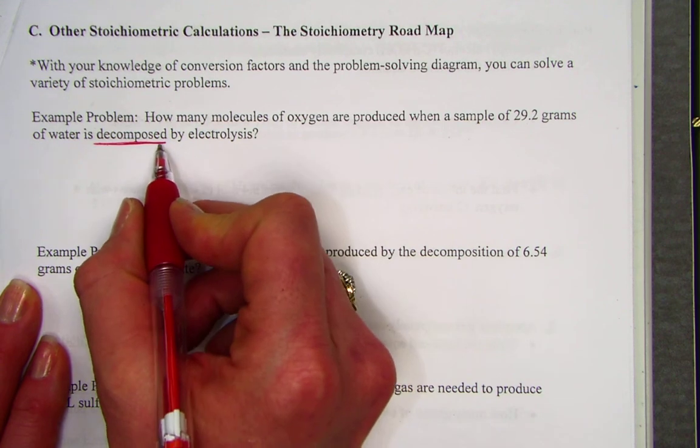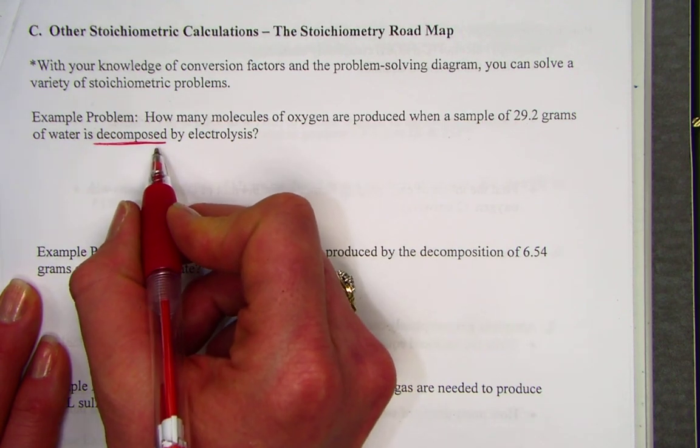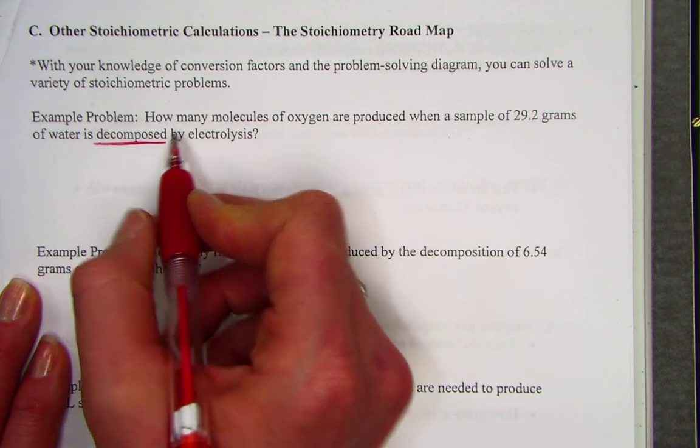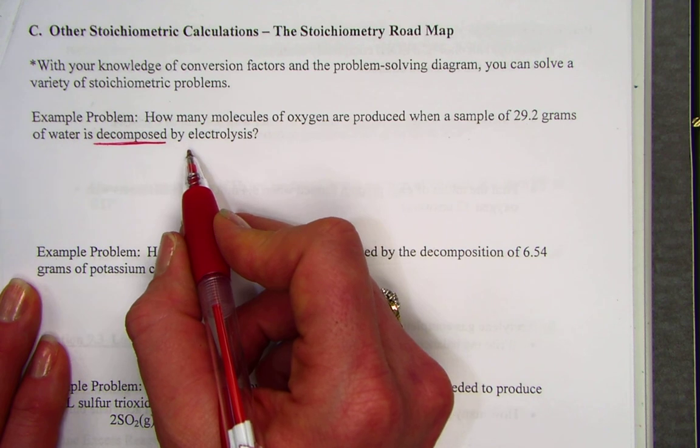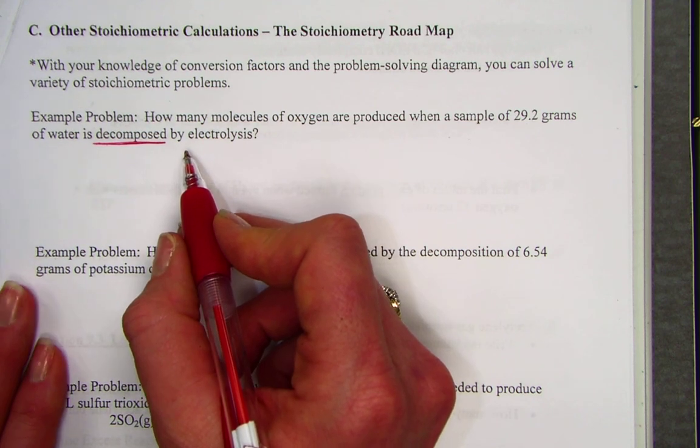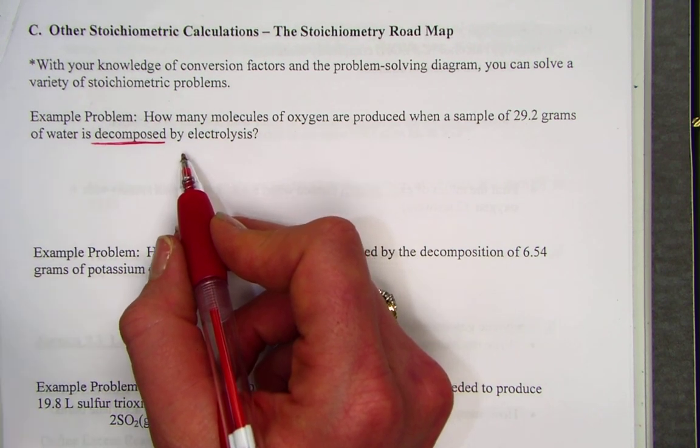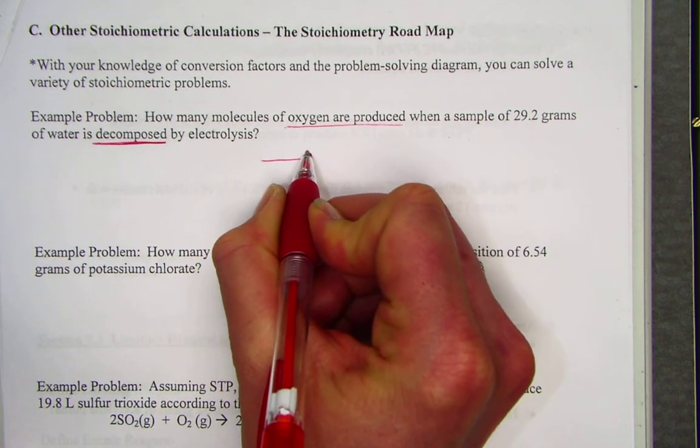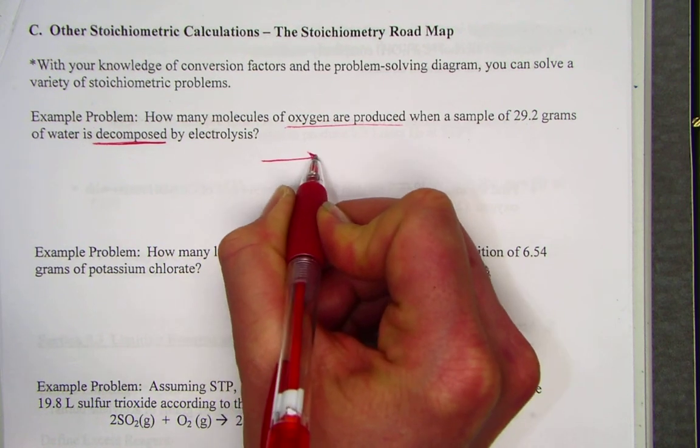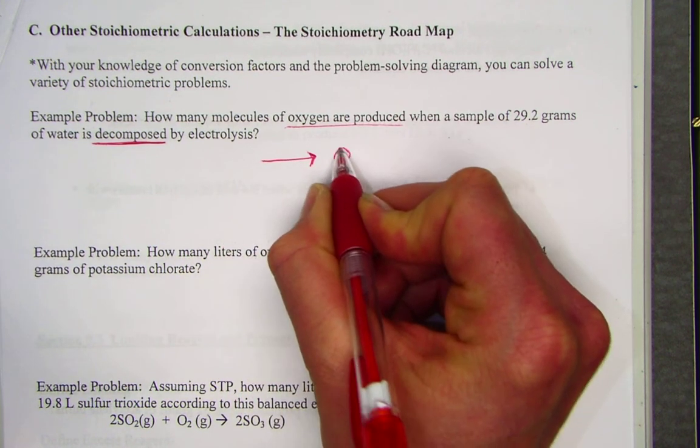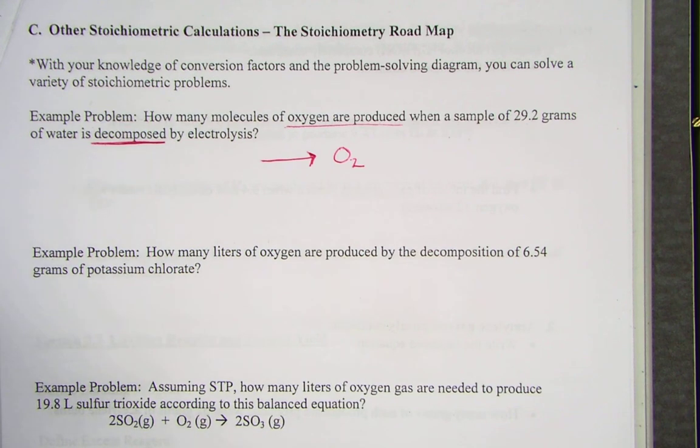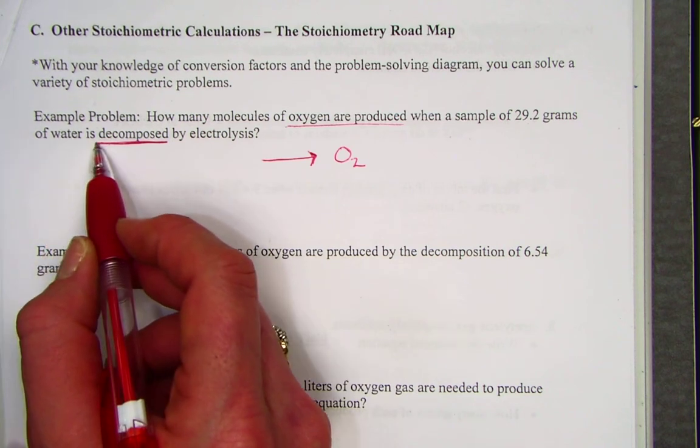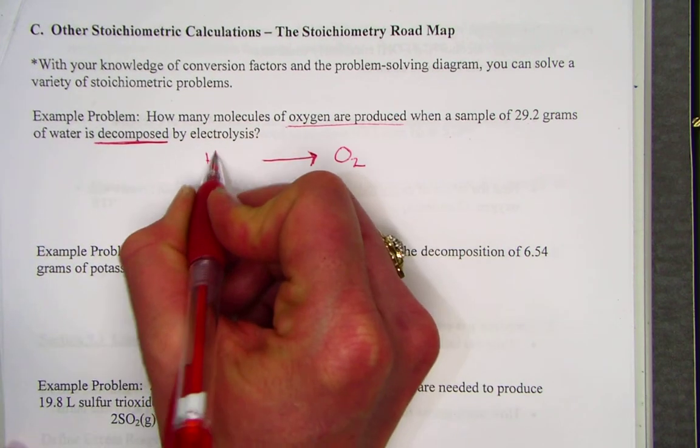I'm noticing the pattern of chemical change is given to me by the word decomposed. The pattern of decomposition suggests one reactant breaking down into simpler products. When I first read my example problem, I tend to just ignore all the numbers and try to pull out reactants and products. Oxygen is being produced. If I think about what that means, on the right side of my arrow, I know oxygen molecules are being produced. They're being produced from the decomposition of water. Water is our reactant.